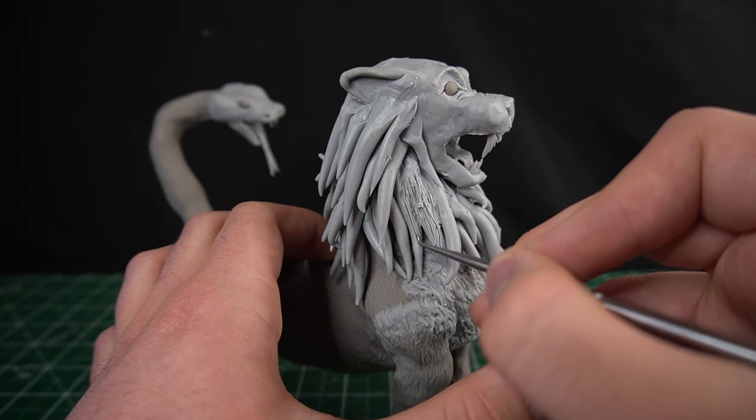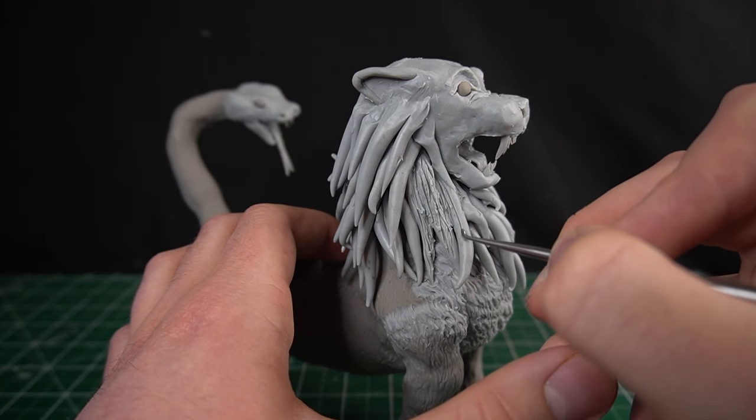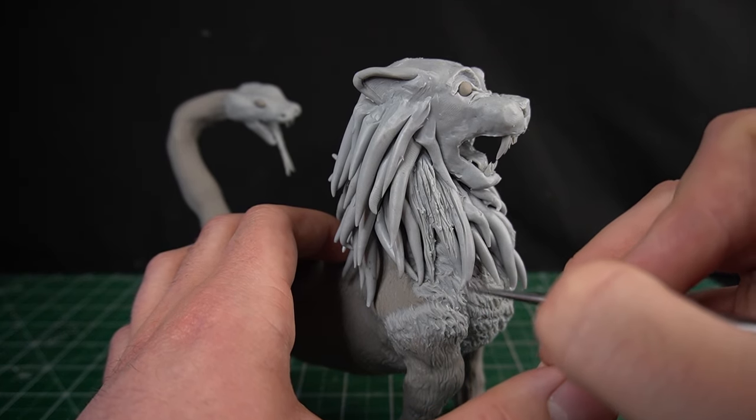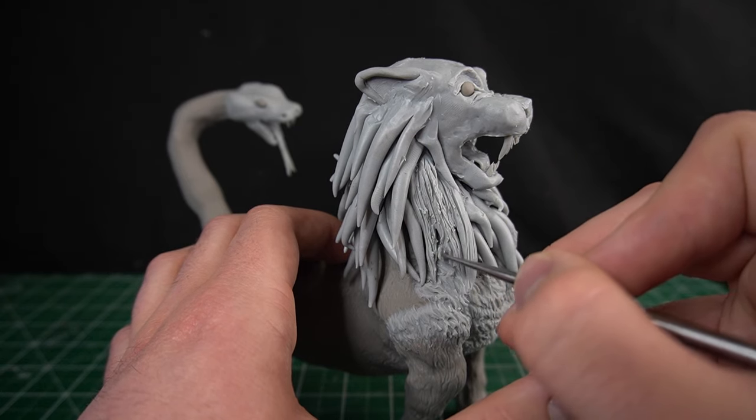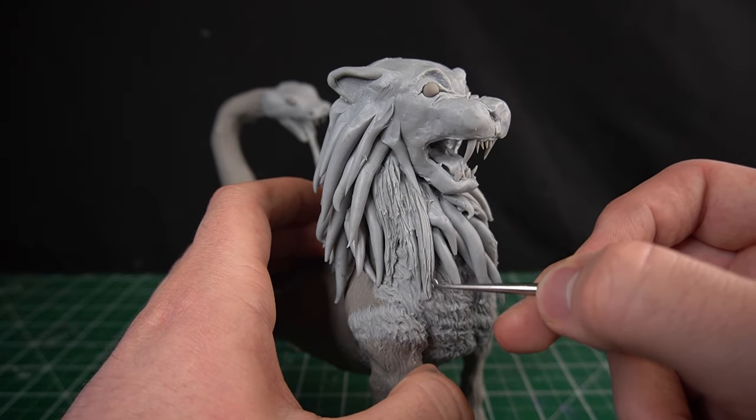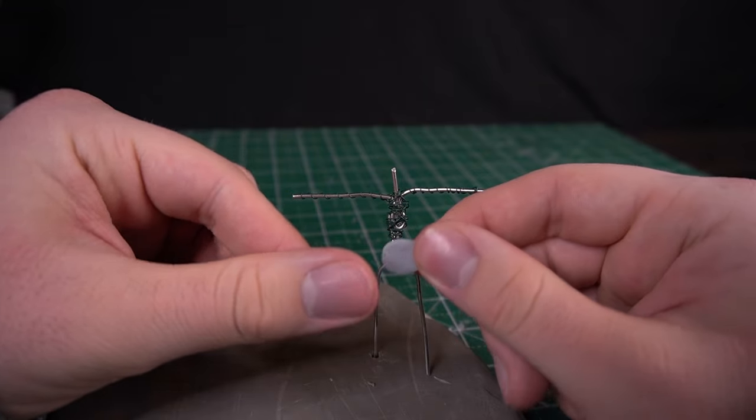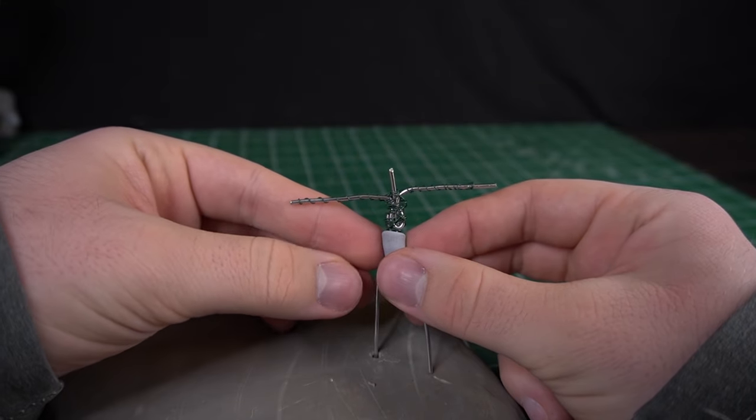Using the flat edge of a small spoon tool, I begin to slice in the hair texture for the lion's mane. Now that the sculpting for the chimera is finished, I'm on to Percy.